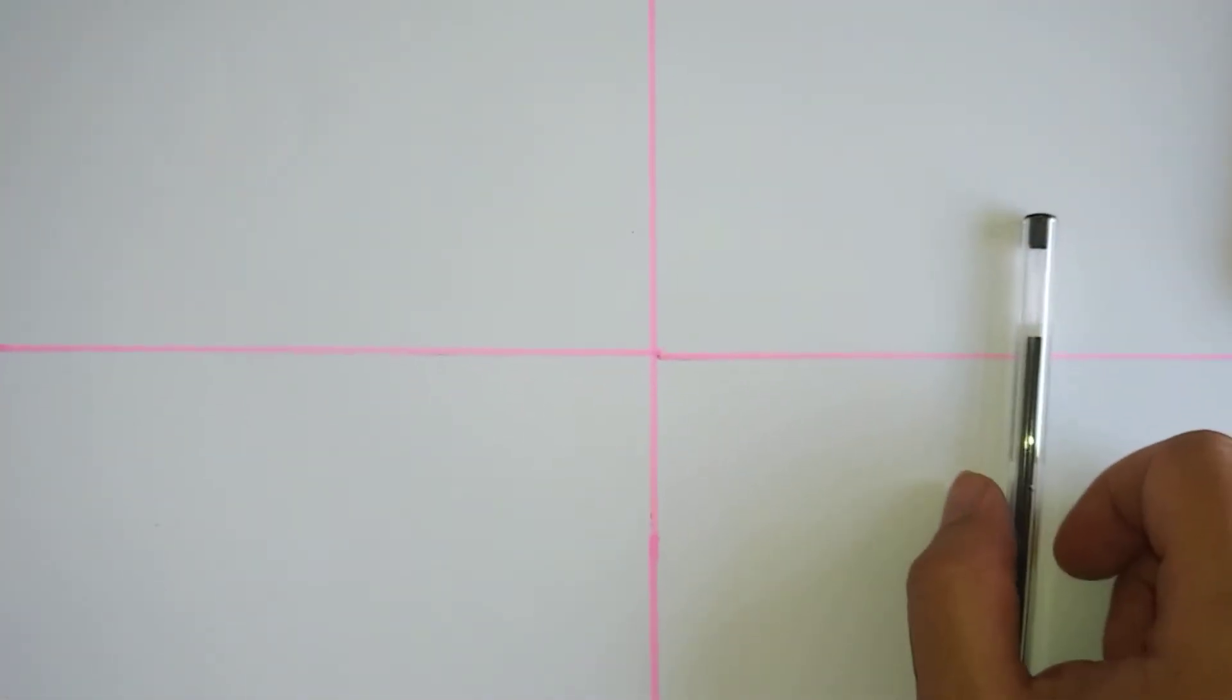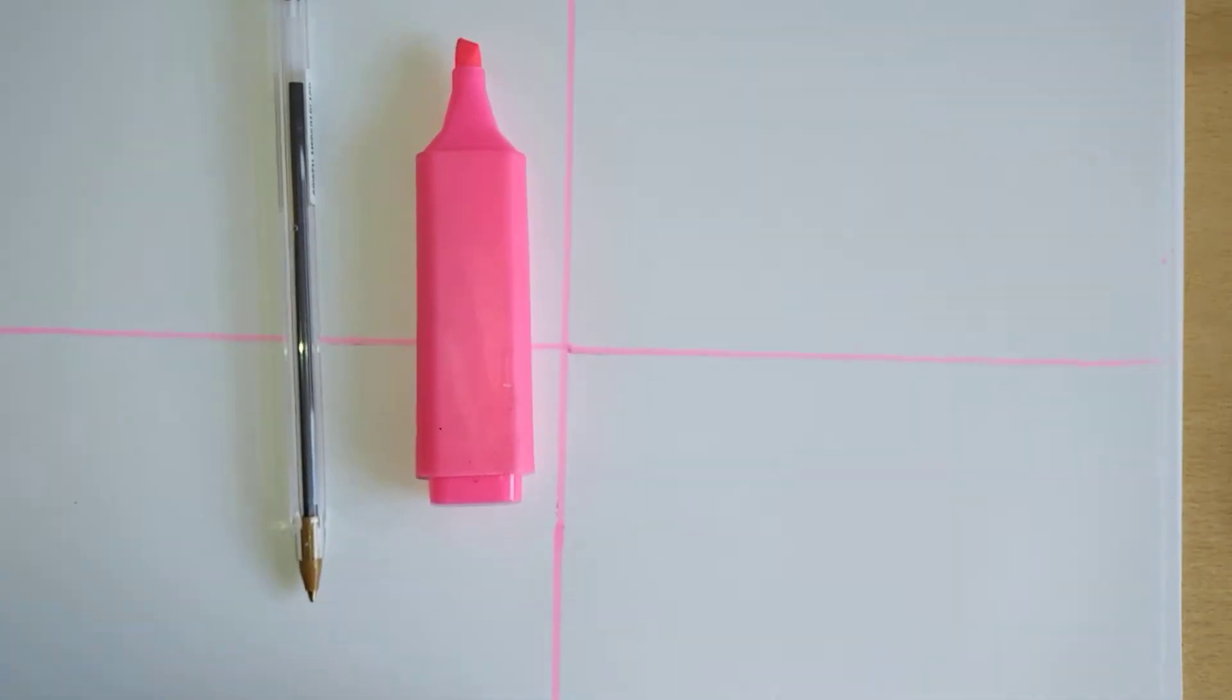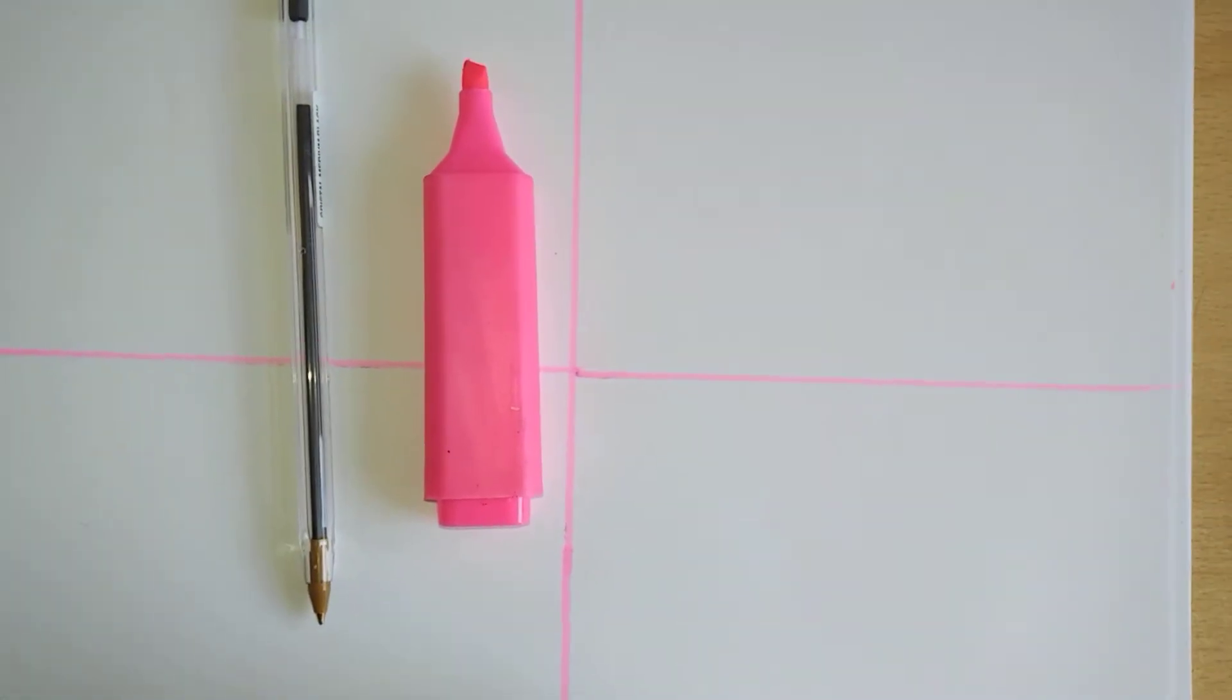Today we are going to explore the basic idea of fractions. So what do you need? You need a black pen and one highlighter to identify each part of the pizza.